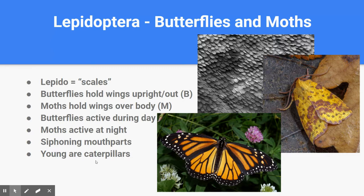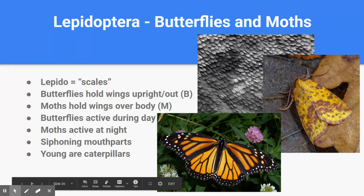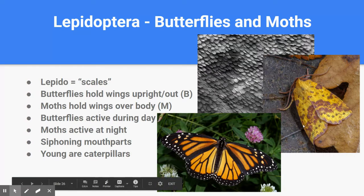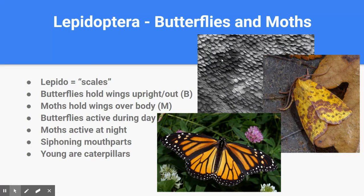Lepidoptera — probably one of the harder ones to pronounce, but it just takes practice. These are the butterflies and moths. 'Lepido' in Greek translates to scales — not scales for weighing, but scales similar to what a fish has. If you see a magnified close-up view of a butterfly or moth wing, all of that color is made of little overlapping plates, very much like the shingles on your roof. That's where the name comes from.